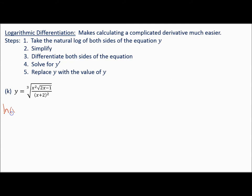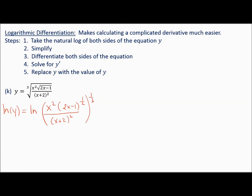Here's what we're going to do. Step 1: take the natural log of both sides. I have natural log of y on the left and natural log of this whole expression on the right. I'll rewrite the radicals as rational exponents: x squared times 2x minus 1 to the 1 half, divided by x plus 2 squared, all raised to the 1 third power.